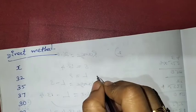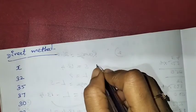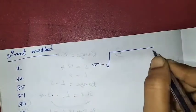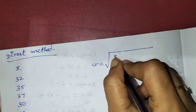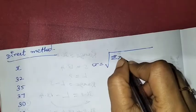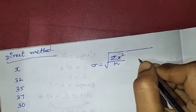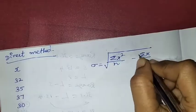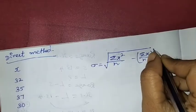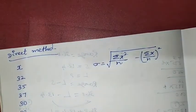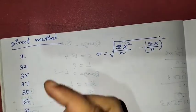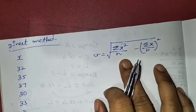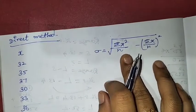Now we have the direct method formula. Sigma is equal to square root of summation x square by n minus summation x by n, the whole square. This formula is used. Now we will substitute into this formula.